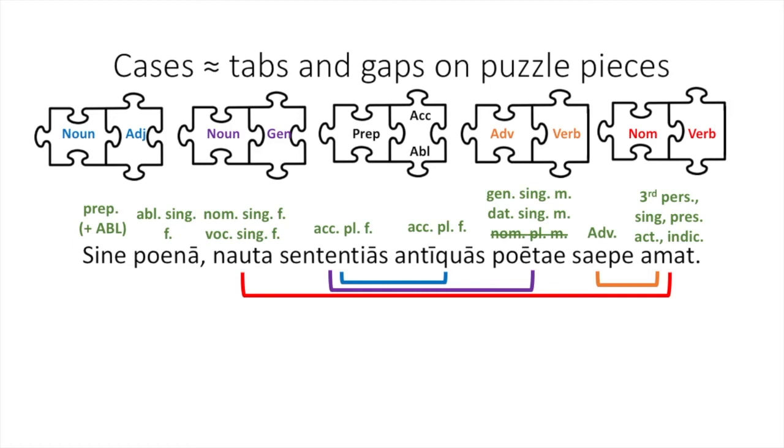Lastly, the preposition sine takes the ablative case. Conveniently, its object, poena, is right after the preposition. Together, these rules help us construct certain chunks or parts of the puzzle. The nauta amats, the sententias are antiquas and of the poetae. The amat is happening saepe and sine poena. The only thing that remains is to put these together using our uses of cases.